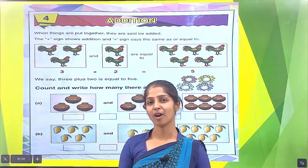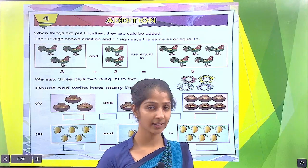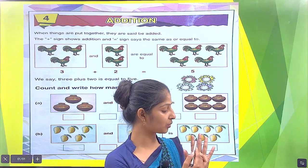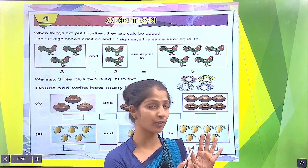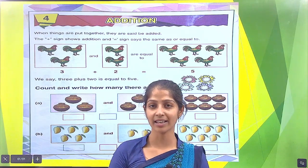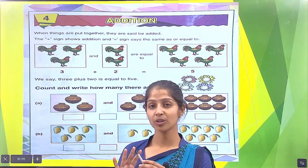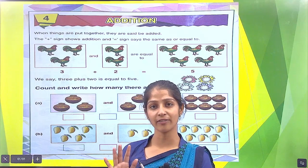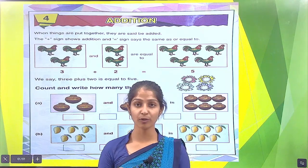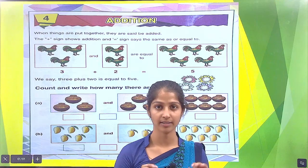Tell me how many fingers in your one hand. There are 5: 1, 2, 3, 4 and 5. In your next hand, there are also 5: 1, 2, 3, 4 and 5. So calculate your fingers in your both hands.